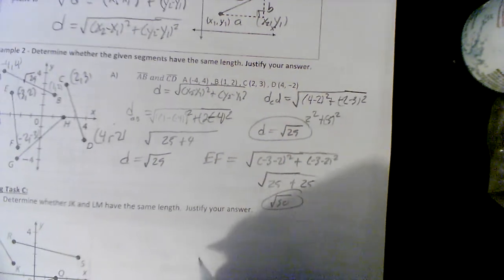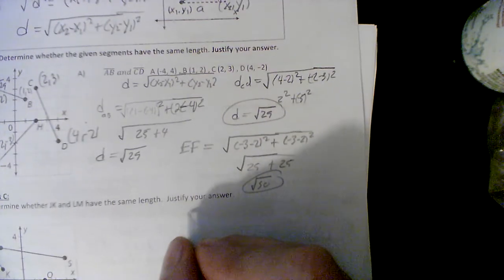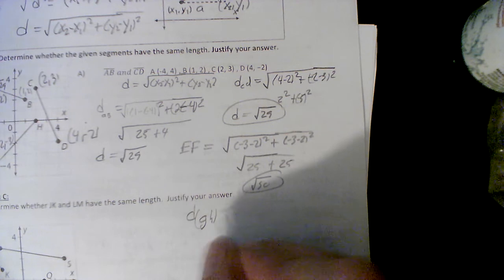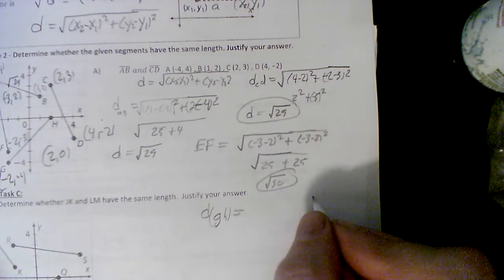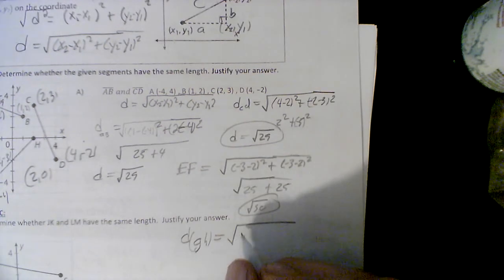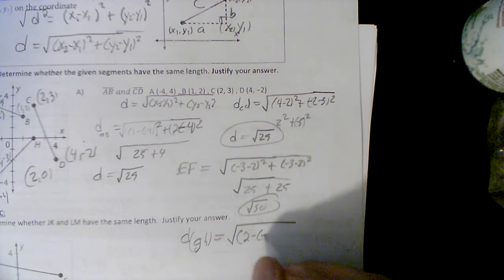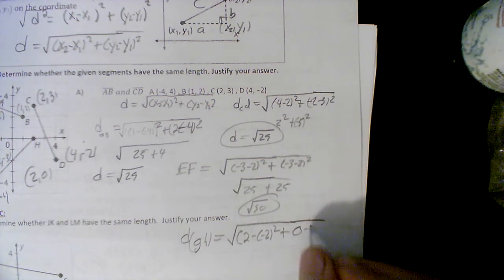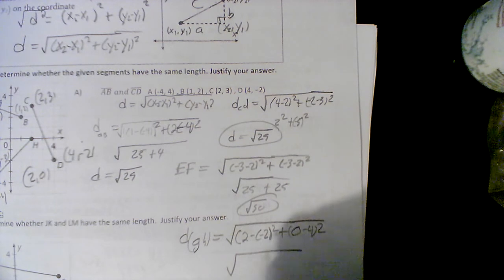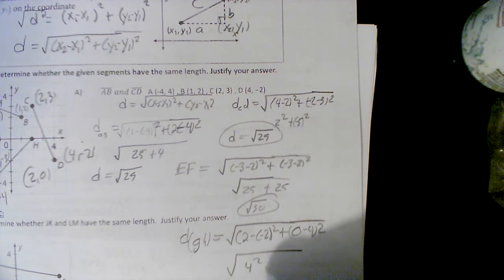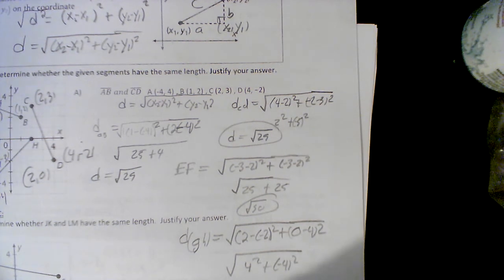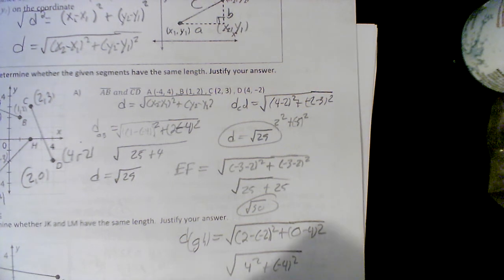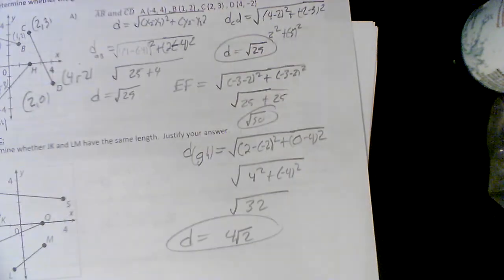And let's do one more here. You try it, pause me if you want and I'll go through it. I'm not going to talk through the answer. Let's get the distance of GH and we're going to stop with this. Alright. And if you did it right you're going to get rad 32 or 4 rad 2. Alright, I'm going to pause.